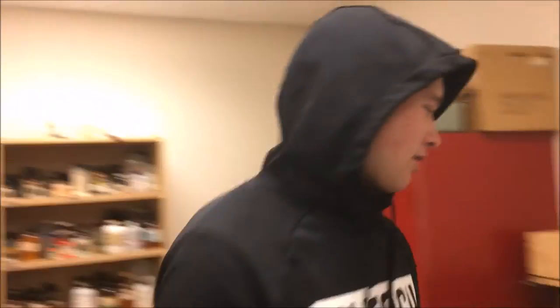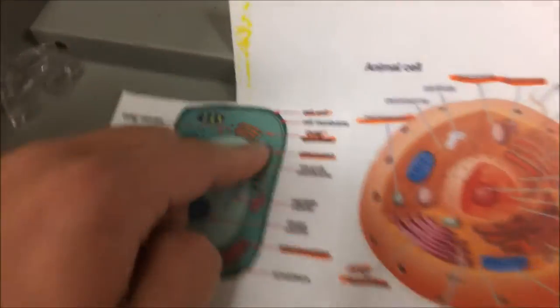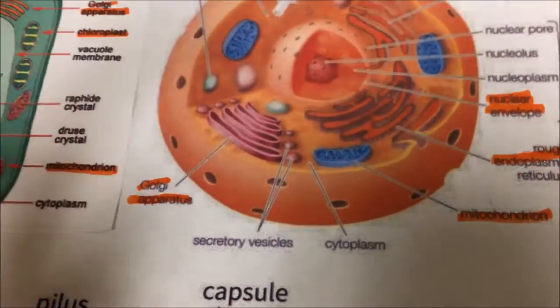Grana are thylakoid sacs. Thylakoids are the interior of the chloroplast, which is dominated by a network of hundreds of membrane-bound, flattened sac-like structures. The Golgi apparatus can be found in both plant and animal cells. The Golgi apparatus is a complex of vesicles and folded membranes within the cytoplasm of most eukaryotic cells, involved in secretion and intracellular transport. A lysosome is an organelle in the cytoplasm of eukaryotic cells containing degradative enzymes enclosed in a membrane.